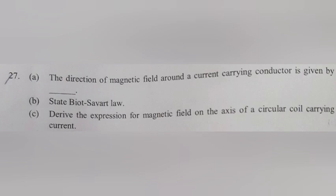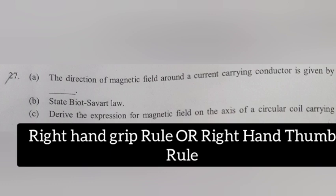Question 27A: The direction of magnetic field around a current carrying conductor is given by. Answer: Right hand grip rule or right hand thumb rule.